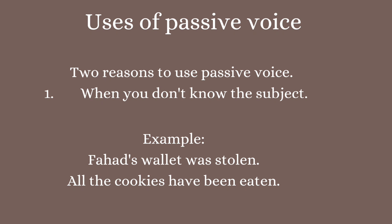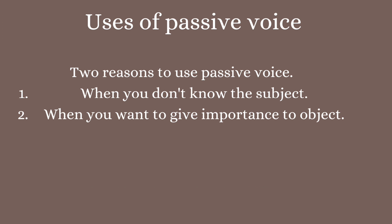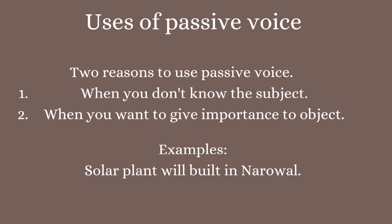When we don't know the subject, we use passive voice. Second is when you want to give more importance to the action rather than the subject who performs the action. For example: 'Solar plant will be built in Narwal.' Here we are giving more importance to the solar plant being built, and are least concerned about the person who is building it.